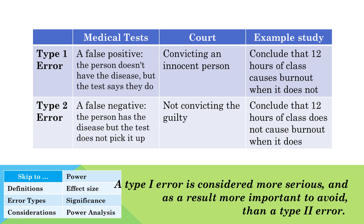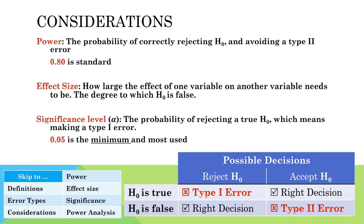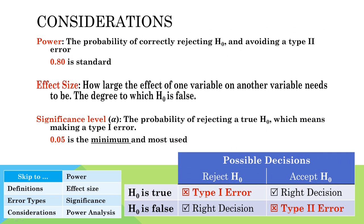One way to help you remember the meaning of a type 1 and type 2 error is to find an example or analogy. As a nurse, you may identify most with the idea of thinking about medical tests. A lot of teachers use the analogy of a courtroom when explaining type 1 and 2 errors. It is impossible to know for sure when an error occurs, but researchers can control the likelihood of making an error in statistical decision making.